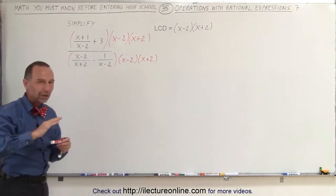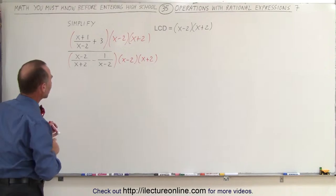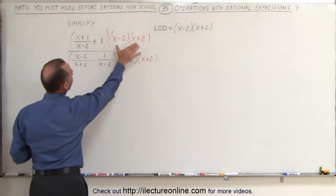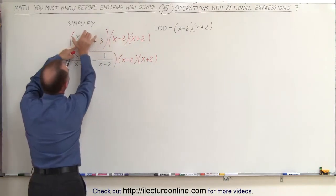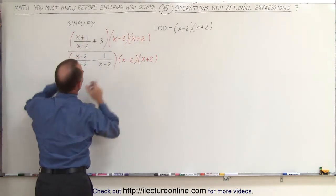When we do that, we get rid of all the denominators. That's the way to eliminate those. So we'll multiply this times the first fraction. Notice the x minus 2 cancels out, and we're left with x plus 1 times x plus 2.